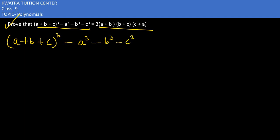a plus b plus c whole cube, this would result into a cube plus b cube plus c cube. Then I would have is three times a plus b, then we have b plus c and then we have c plus a.